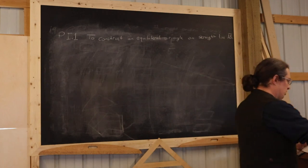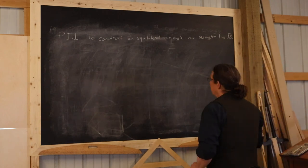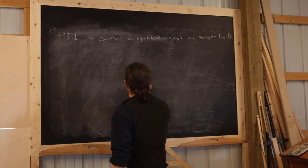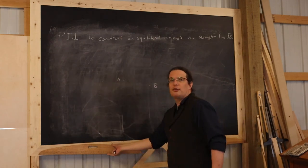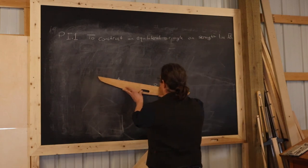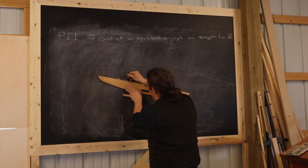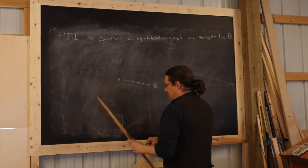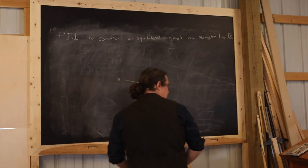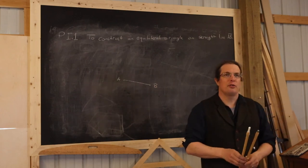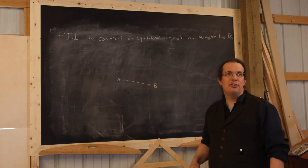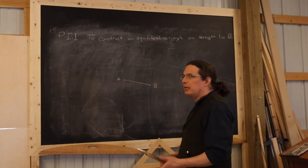Euclid is saying that if you are given some line that connects the points A and B, we know that line is always possible to construct. So if you're given a line like that, then Euclid tells you that it's possible to construct an equilateral triangle where that's one of its sides and the other two sides share the same length. Here's how you do it.